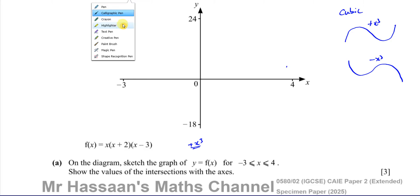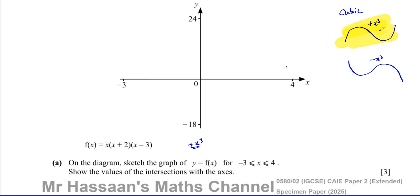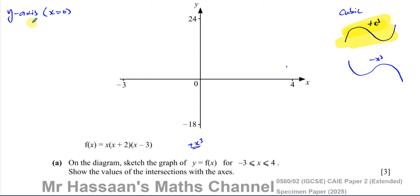So it's going to have this type of shape — up, down, and up. Next, we find where it crosses the x-axis and where it crosses the y-axis. They're telling us to find or show those intersections. Where does it cross the y-axis? A graph crosses the y-axis when x equals 0. So when x is 0, you're going to have 0 times 2 times -3, which equals 0.